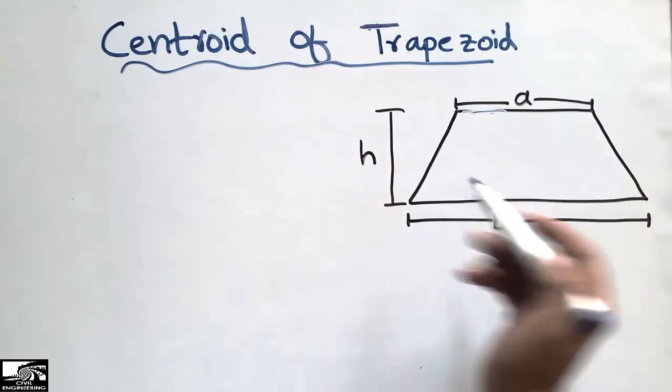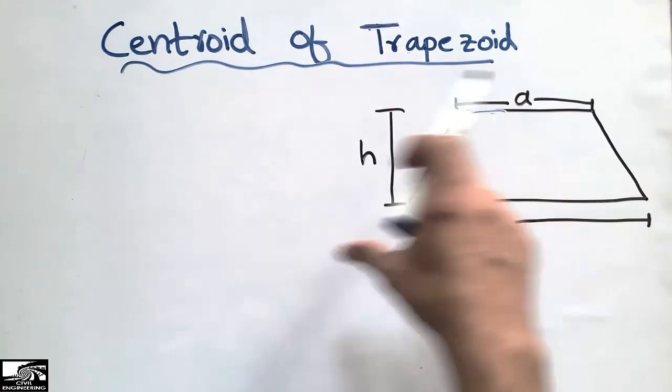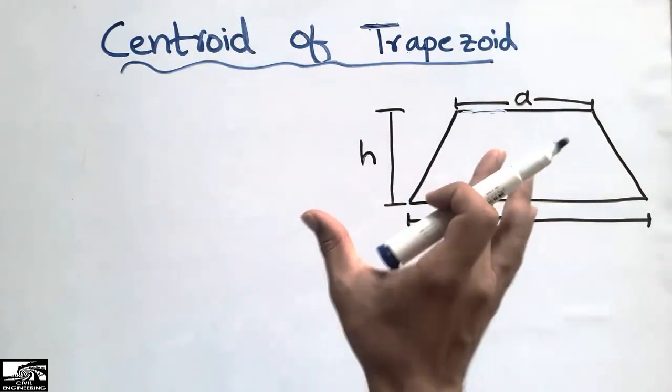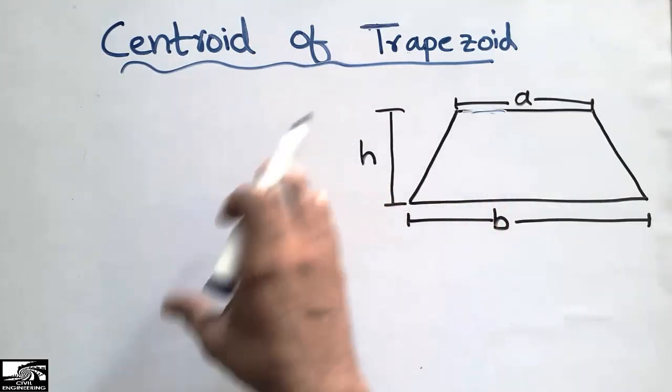So this shape is known as the trapezoid, and we're interested to find the centroid of this trapezoid. I will explain this by taking one example and solving it.